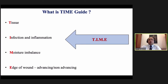So what do we mean when we talk about TIME? T stands for Tissue — we have to see whether it's viable or non-viable. I stands for Infection and Inflammation. M is for Moisture imbalance — the wound should be properly moist. E stands for Edge of the wound, whether they are advancing or non-advancing.